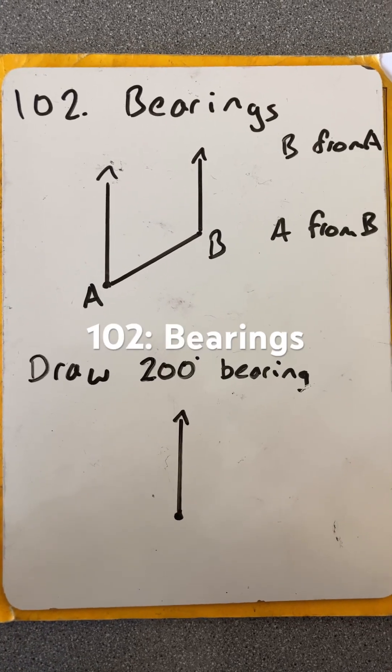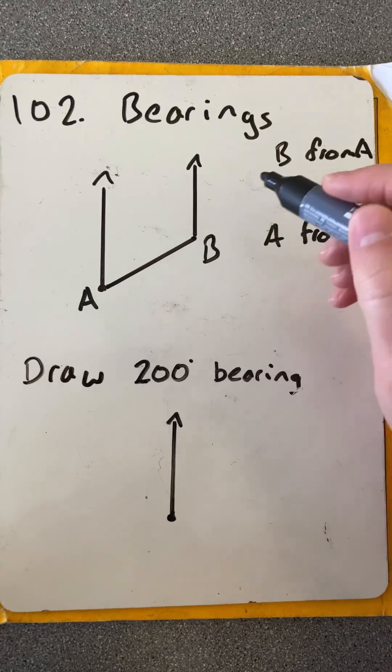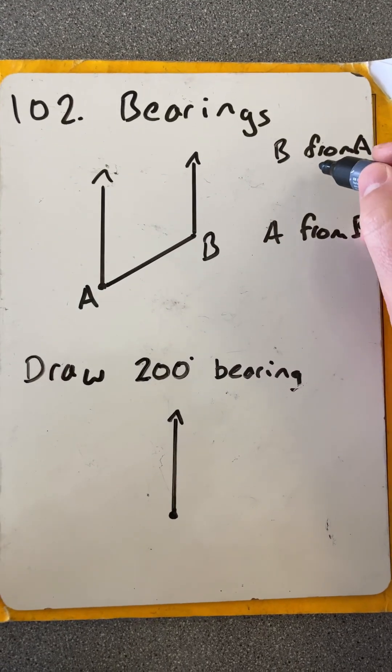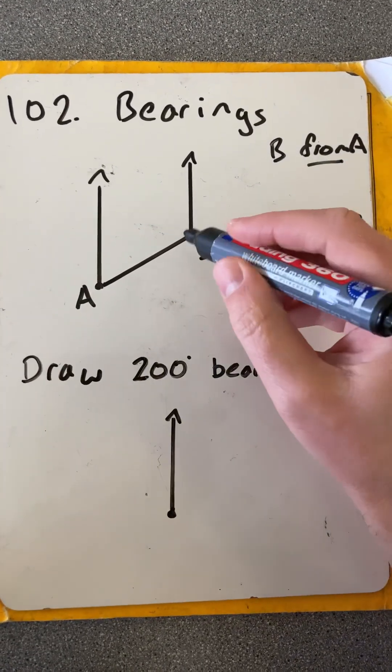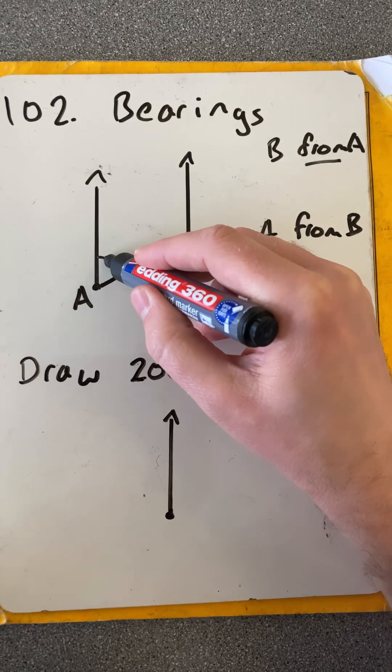Hello and welcome to Martin Math doing Topic 102, Bearings. So we want to read what the bearing is of B from A. Watch those words there. From A means we go to B and look at the bearing as from A. So we need that angle there.